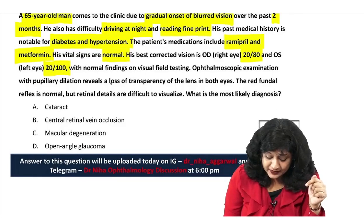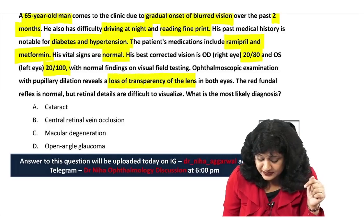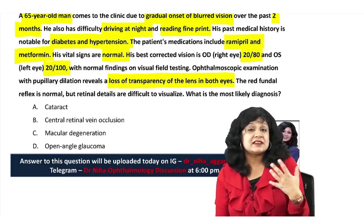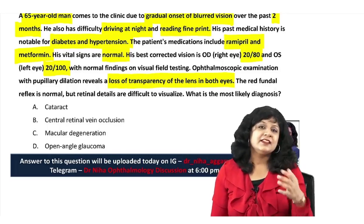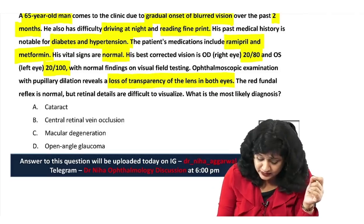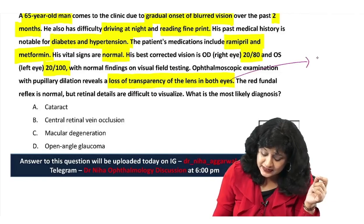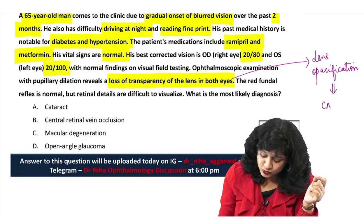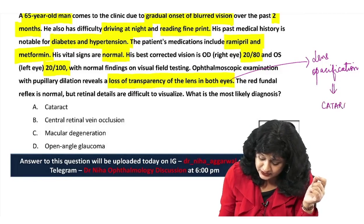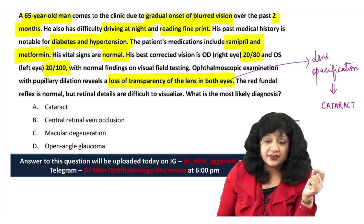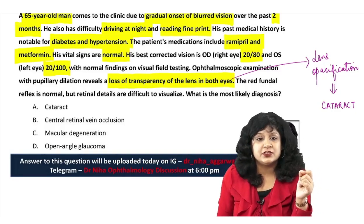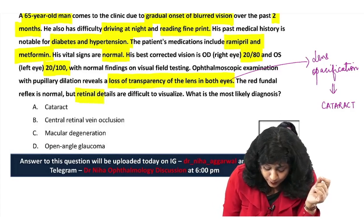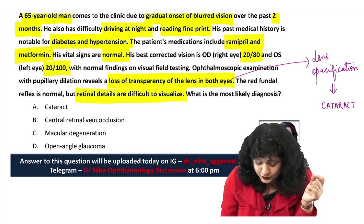Ophthalmoscopic examination with pupillary dilatation shows loss of transparency of the lens in both eyes — this is lens opacification. So basically this is cataract. The red fundal glow is normal, but there are still problems visualizing clearly.